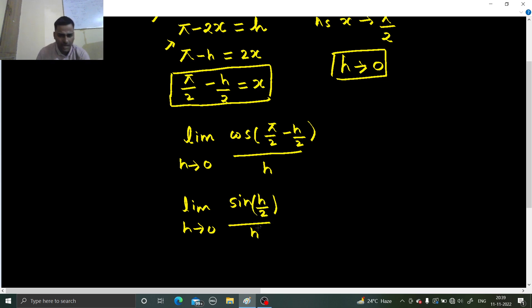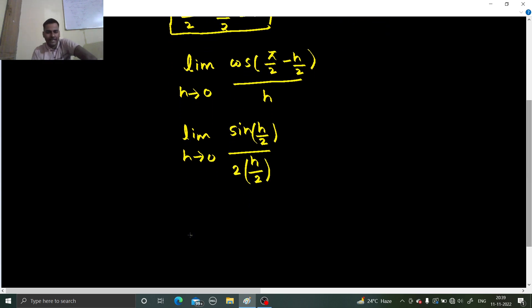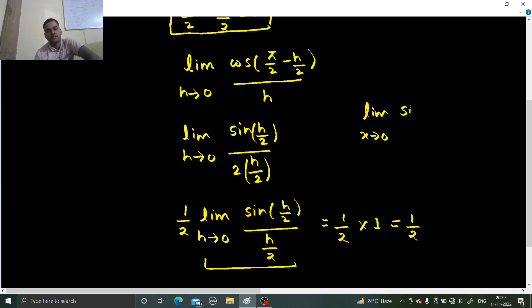Only thing which I have to do now is to make h by 2 in denominator also. For that, I have to divide and multiply by 2 and that 2 I can take out. So 1 by 2 limit h tending to 0 sin h by 2 divided by same h by 2. You know that this limit will give you 1. So your final answer is half times 1 which is half because you know limit x tending to 0 sin mx by mx is 1.